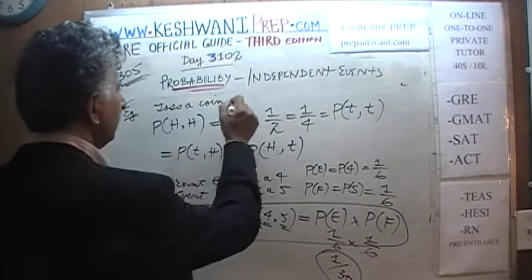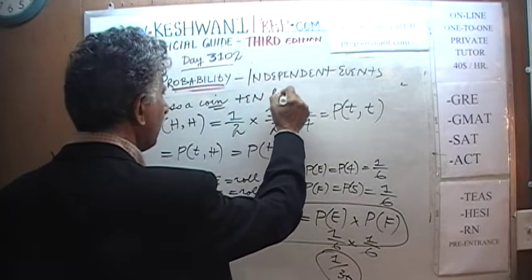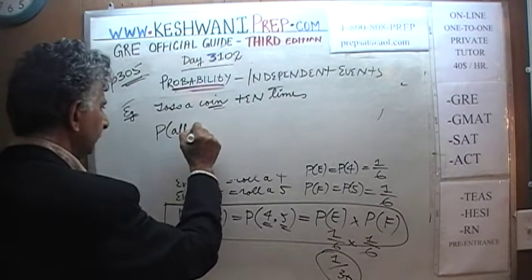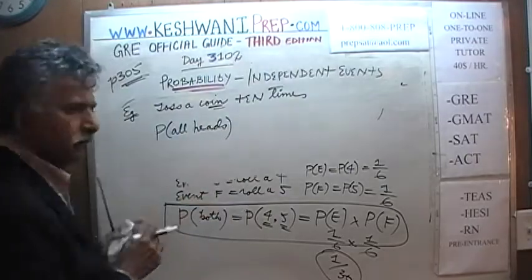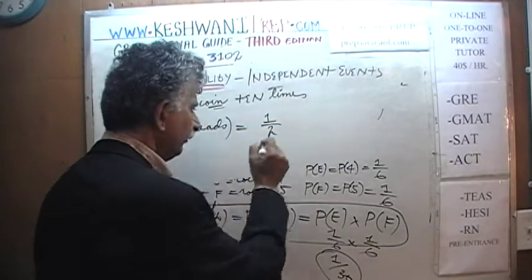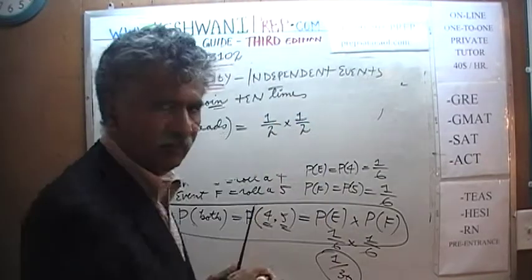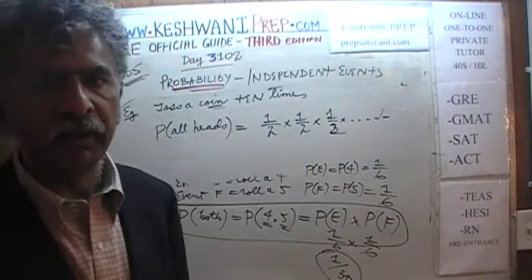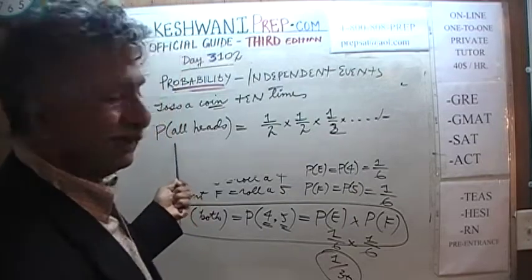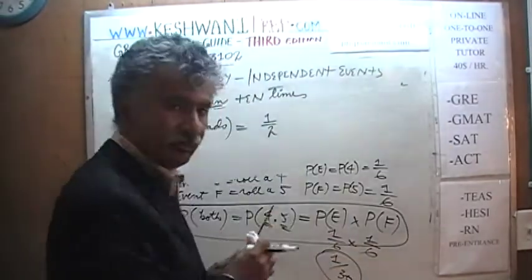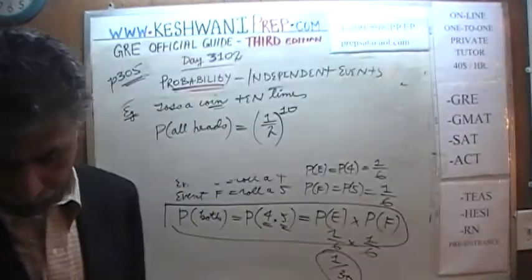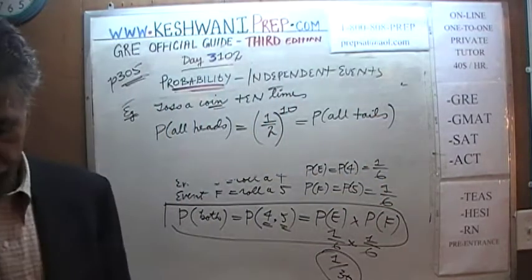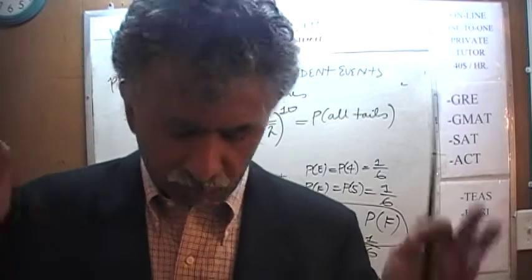Let's toss a coin ten times. What are the odds that we get heads on all ten tosses? Getting a head on each toss is one out of two, and so on for all ten tosses. Therefore, the odds that we will get all heads on ten tosses is simply one-half raised to the tenth power — the same as the odds of getting all tails, or any other specific combination.